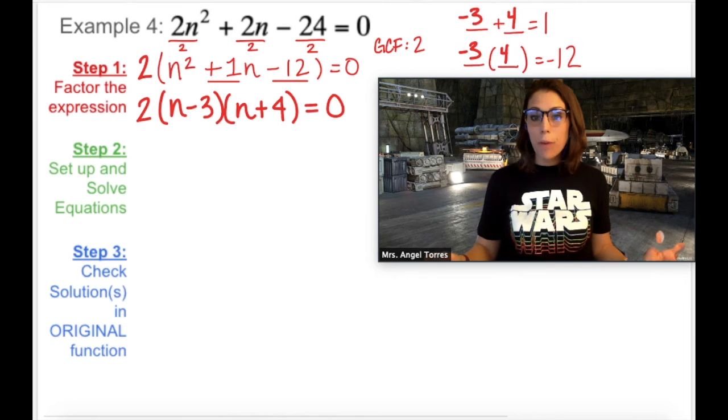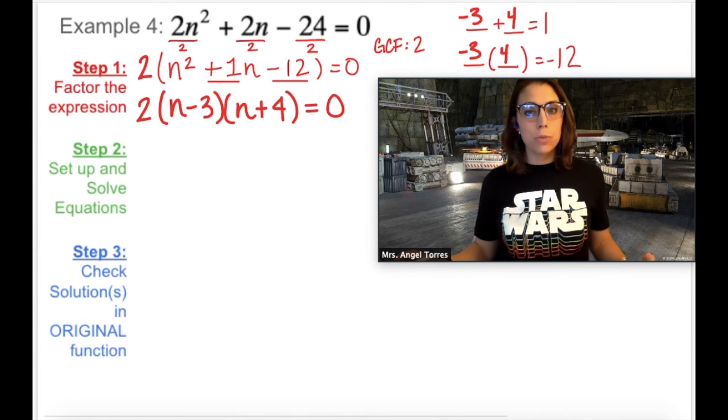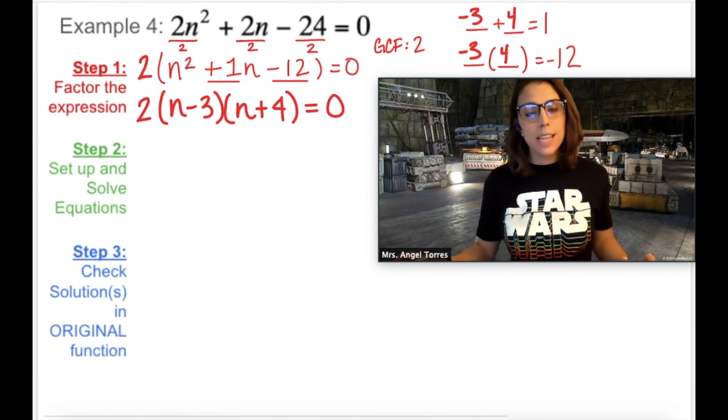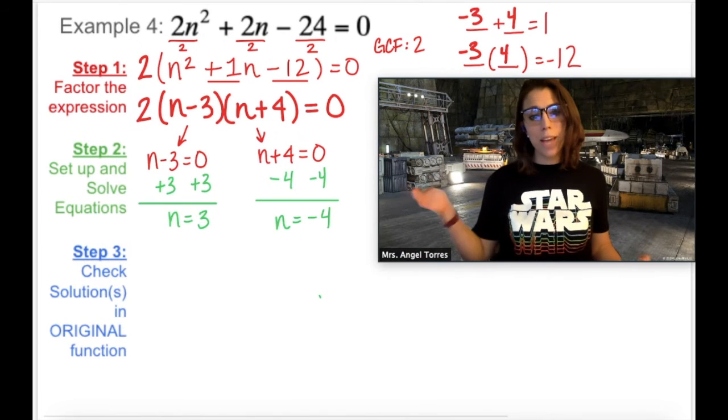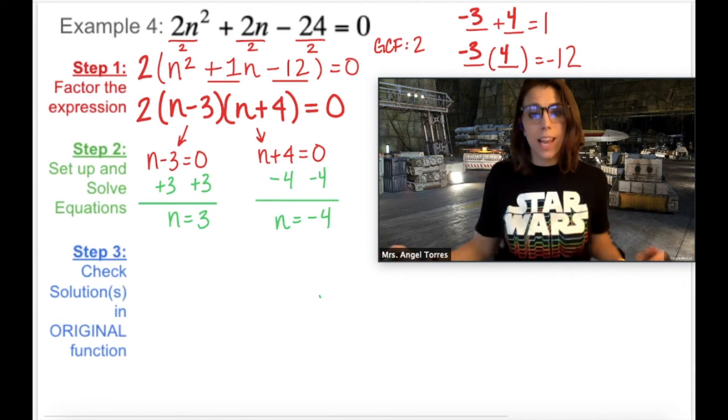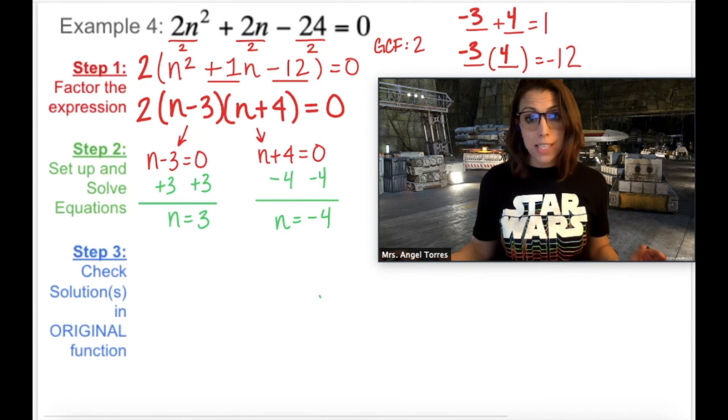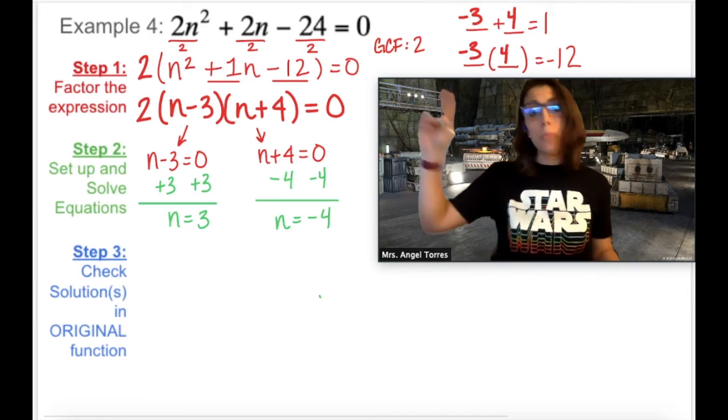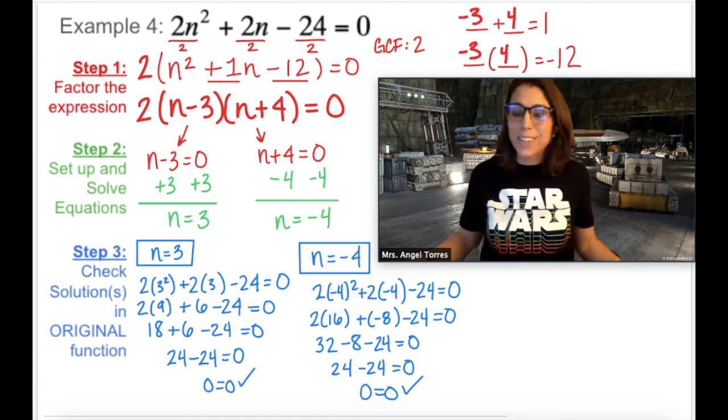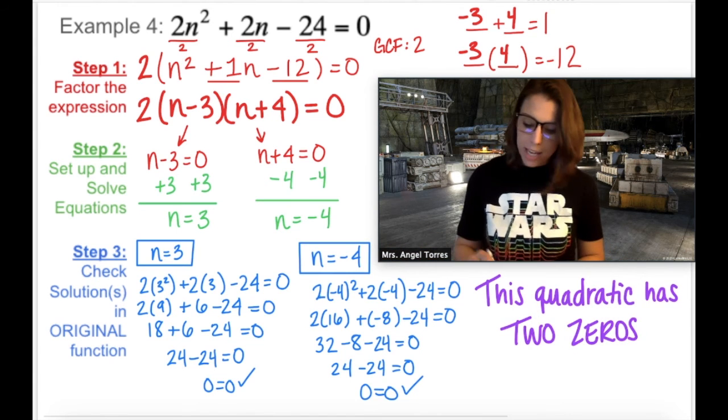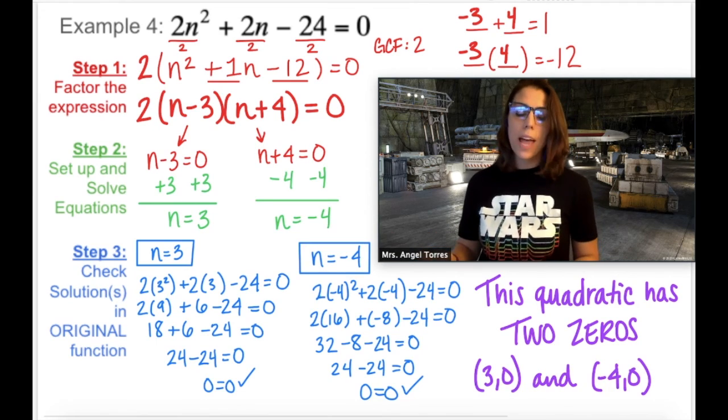Okay, so the two numbers that add up to 1 and have a product of negative 12 are negative 3 and positive 4, putting it into intercept form to my right. 2 times n minus 3 times n plus 4 equals 0. Go ahead and find the zeros now. Great. So whether you use mental math or set up and solve the equations, I ended up with 3 and negative 4. But there's only one way to find out if I did it right. Checking both solutions in the original standard form function. That means the original one with the leading coefficient of 2. So what does all of this mean? This means that the quadratic here has two zeros, and they are 3, 0 and negative 4, 0.